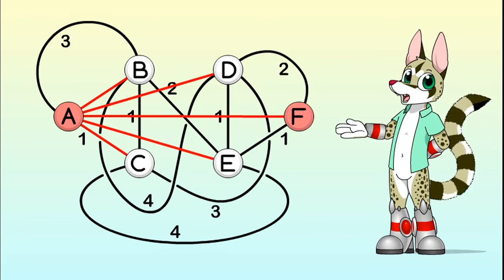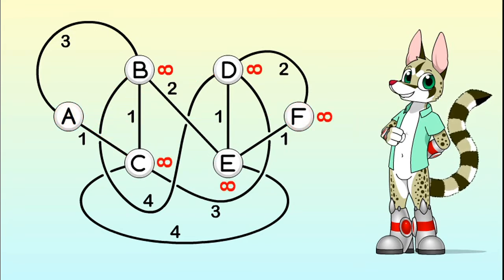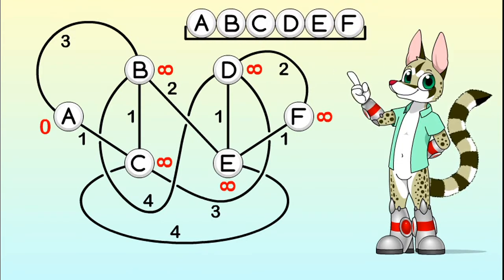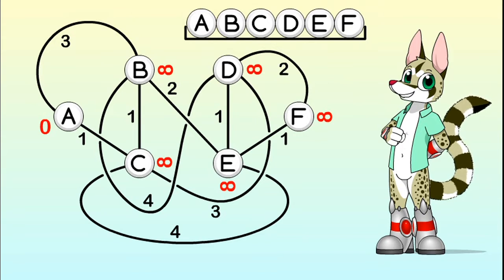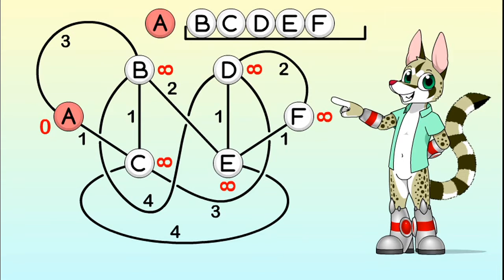At first, these values are unknown, so the computer will assume that they are all infinite, except for the distance from vertex A to vertex A, which is of course zero. The algorithm wants to be thorough, not to make any mistake, so it will keep a set of all the vertices it hasn't fully checked out yet, in order to visit them all one by one. At the beginning, it will always analyze the starting point and see where it can go from there.